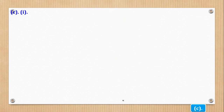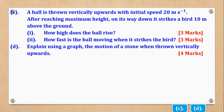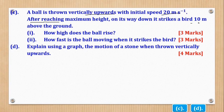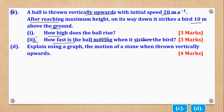Part C Roman 1: a ball is thrown vertically upwards with a speed of 20 metres per second. After reaching maximum height, on its way down it strikes a bat 10 metres above the ground. Roman 1 asks how high the ball rises, and Roman 2 asks how fast the ball is moving when it strikes the bat.